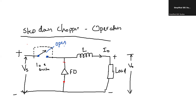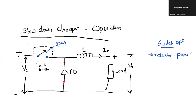The energy is already stored during the ON period — whenever the switch is ON, the energy is stored inside the inductor. Immediately when the switch turns OFF, the polarity of the inductor gets reversed. This is the second condition: whenever switch is OFF, the inductor polarity gets reversed.